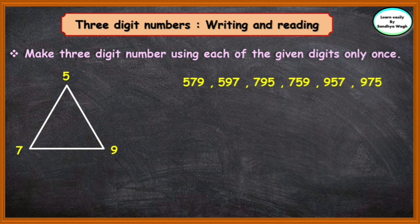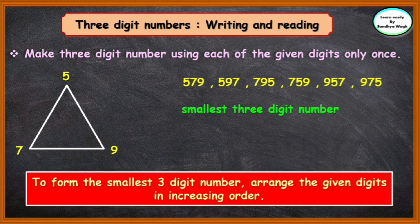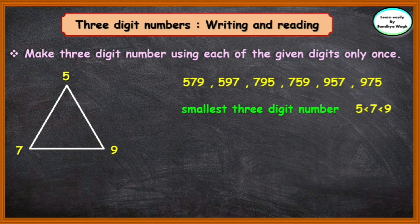Now, children, let us find the smallest three-digit number from these digits — 5, 9, and 7. To form the smallest three-digit number, arrange the given digits in increasing order. Here 5 is smaller than 7, and 7 is smaller than 9. So the number will be 579 — that means 579.